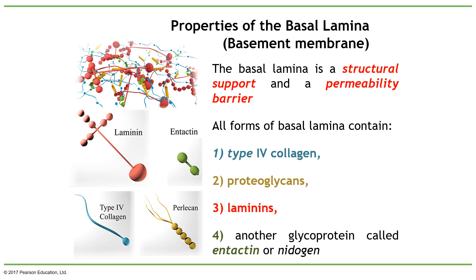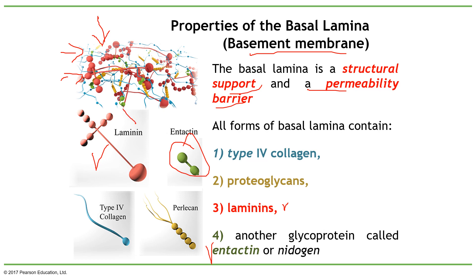The basal membrane can also be called basal lamina. Looking at this diagram, you can see many intricate components mixed together in the basal membrane, which gives structural support and also works as a permeability barrier. Laminin is an important component, and actin shown here in green is another. Collagen is also very important. You also have different types of proteoglycans — remember, glycan is a sugar, so a proteoglycan is a combination of protein and sugar. These are components of the basal membrane that you will need to remember for future lectures.